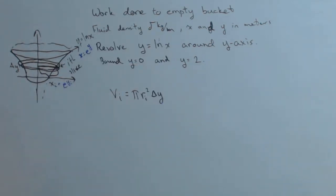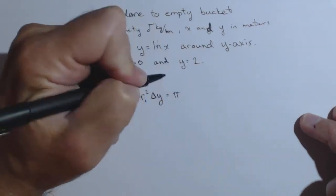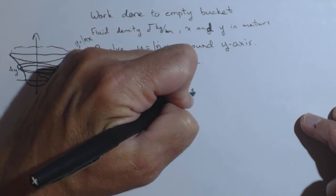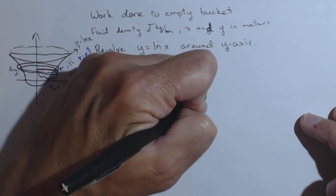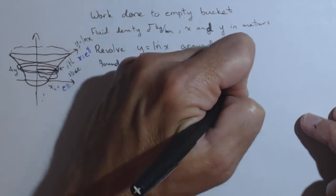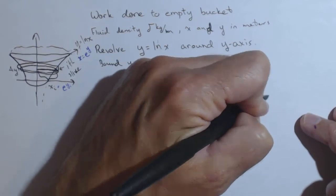When we plug that in, our volume for the i-th slice is pi times the radius of the i-th slice, which is e^(y_i), squared, times delta y. With one quick step of simplification: pi*e^(2y_i)*delta y.